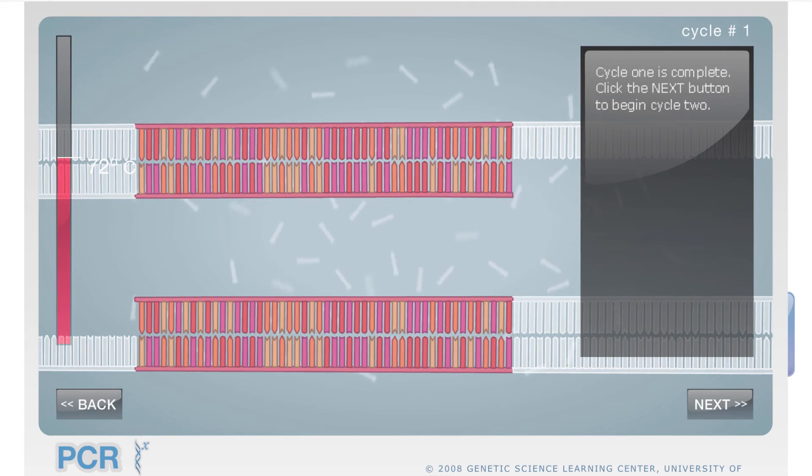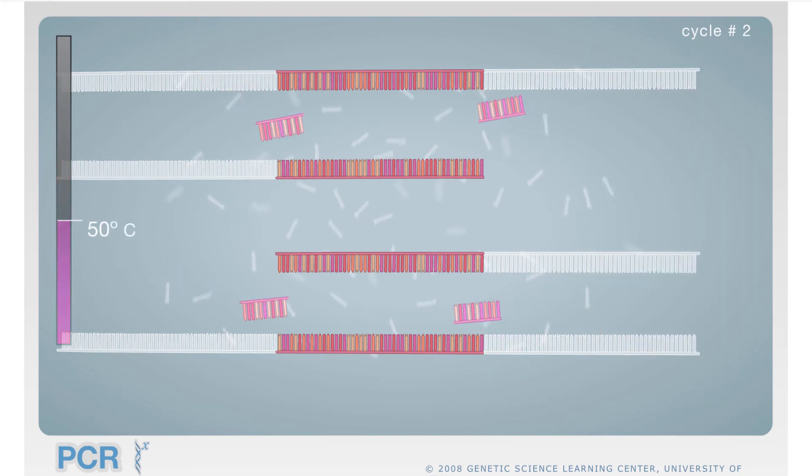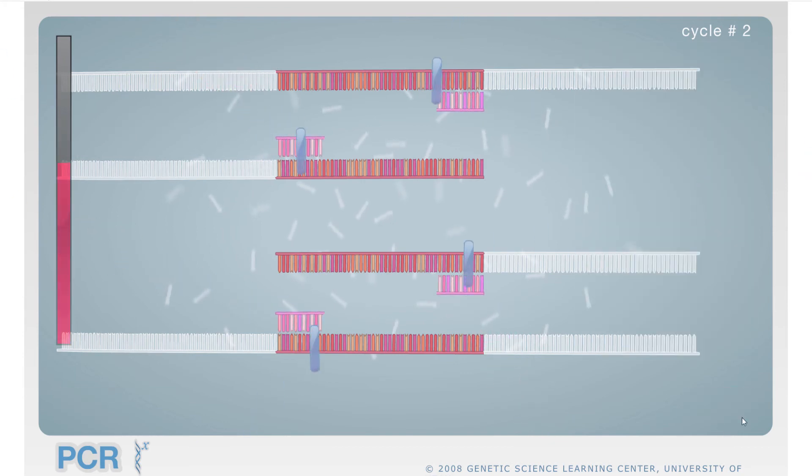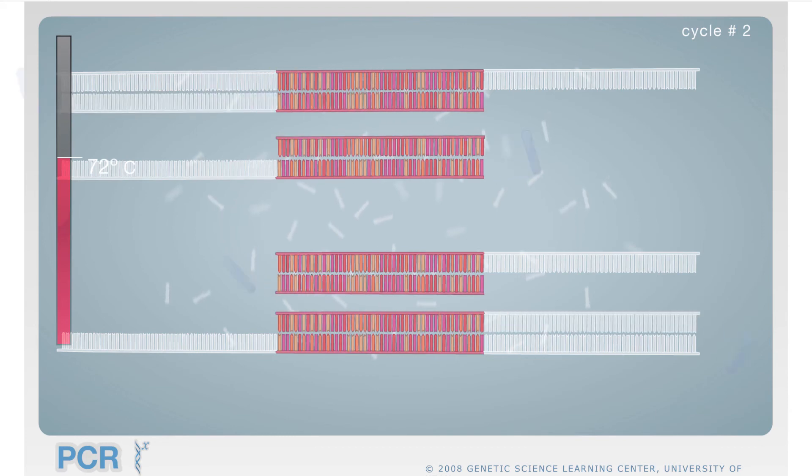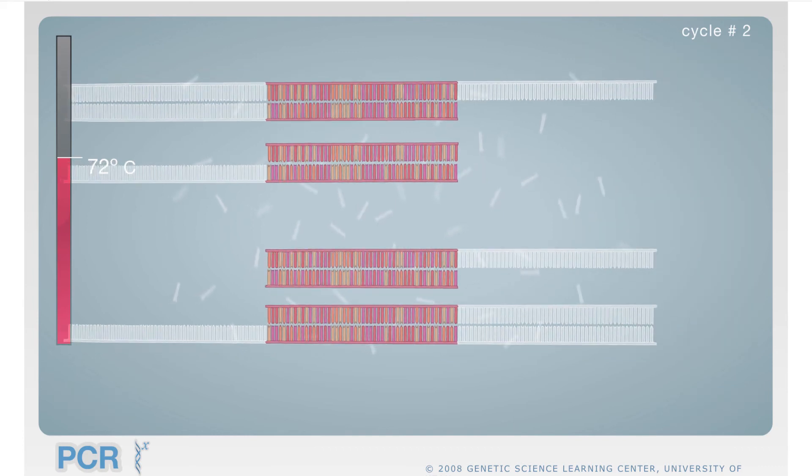Next is to repeat the cycle. Again, 95 to separate the strands. Then cooling to 50 so primers can attach. Then raising back to 72 for your TAQ polymerase to do its job. Now we have four segments after the second cycle. And we have to keep on repeating this.